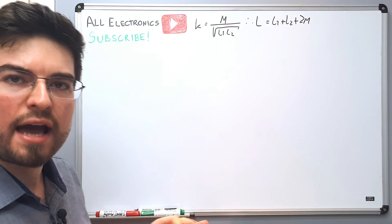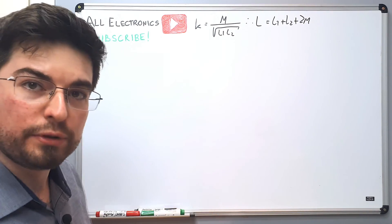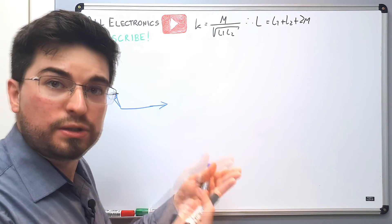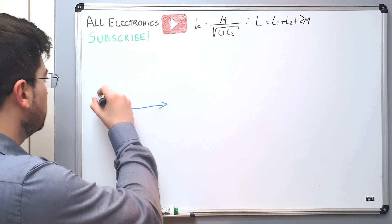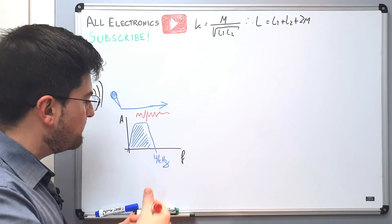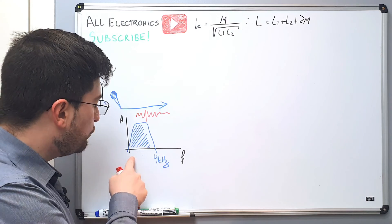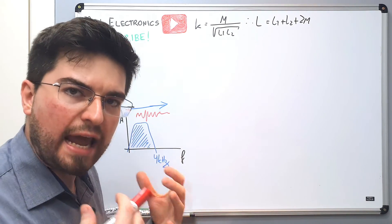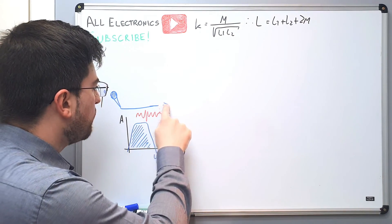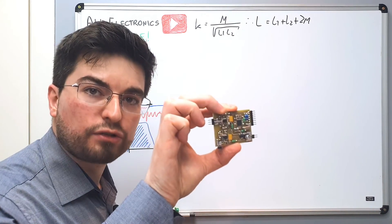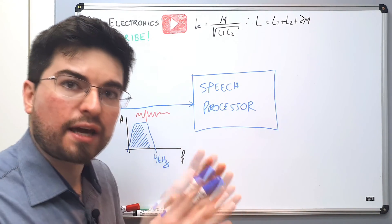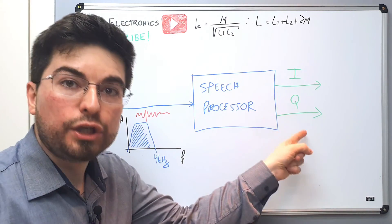The main idea here is that we have a speech signal at the input — a voice signal — here we have a microphone. This is a mechanical-to-electrical transducer where the mechanical waves of the voice are transformed into electrical waves, and this electrical signal has its main power from zero to four kilohertz. The human voice has a substantial amount of energy from zero to four kilohertz. This electrical signal enters the speech processor and the speech processor generates two signals: an in-phase signal and a quadrature signal — I and Q signals.